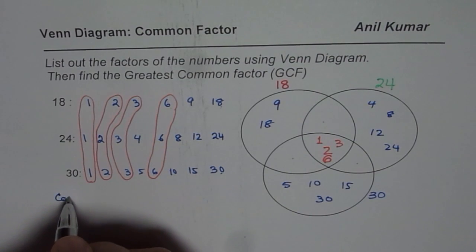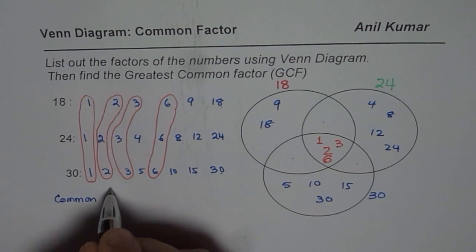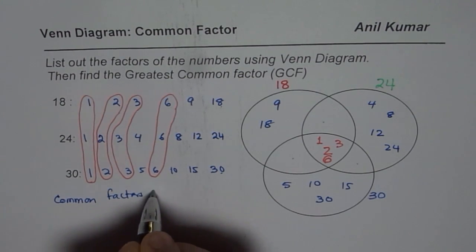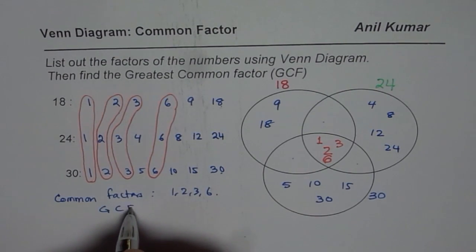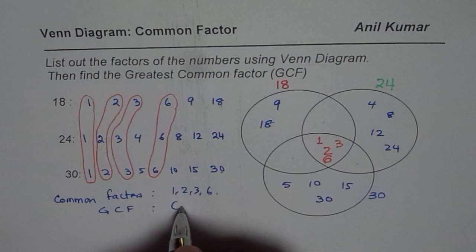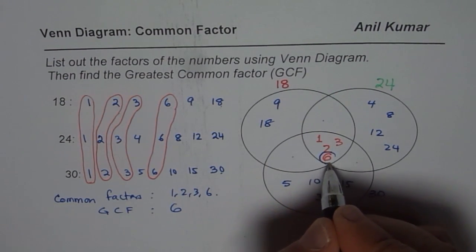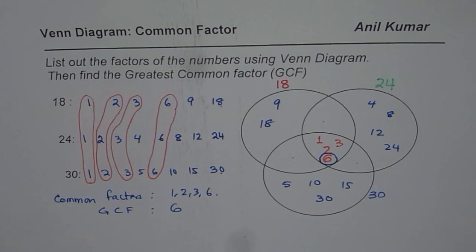You can write down common factors as 1, 2, 3, and 6. And the greatest common factor is 6. So that is the greatest common factor for you. So that is how you can do this kind of question. I hope that helps. Thank you.